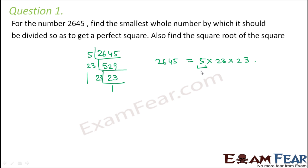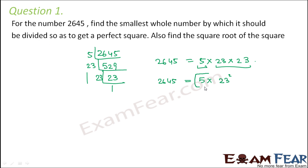So you see 5 does not exist in pairs, but 23 exists in pairs. So we can write it as 5 into 23 square. Do you think that 2645 is a perfect square? No, it is not, because you cannot write it as the square of a single number since 5 exists singly. The question asks: what is the smallest whole number by which it should be divided to get a perfect square? The extra factor is 5, so if we divide by 5, then 5 will get cancelled out and it will become a perfect square. Therefore it should be divided by 5.